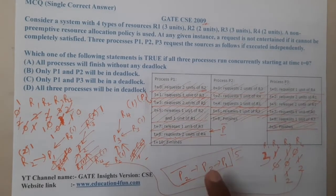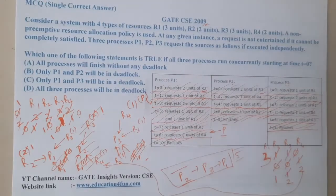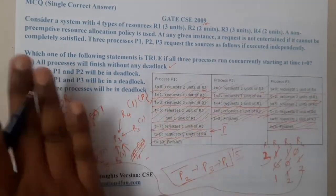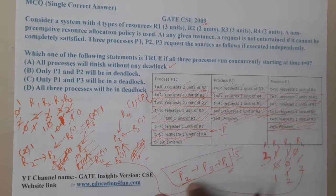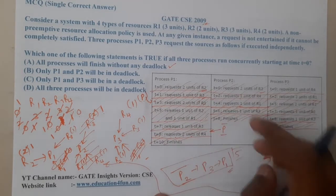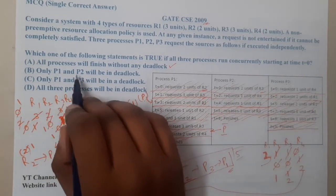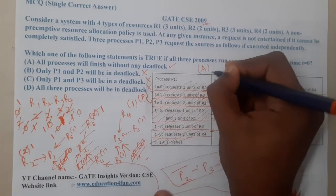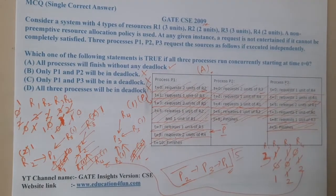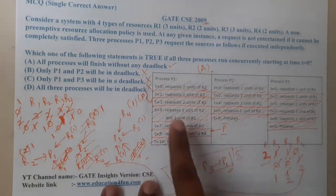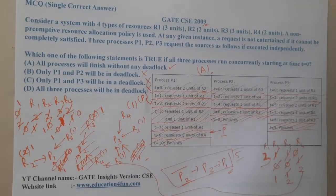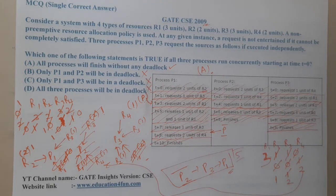This safe sequence confirms option A: all processes will finish without any deadlock. There is no deadlock situation at any point. The key challenge in this question was that resources were specified with respect to time rather than given directly. I hope everyone got a clear idea. In the next lecture we will continue with the next question — thank you, like share and subscribe!